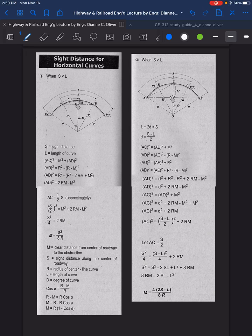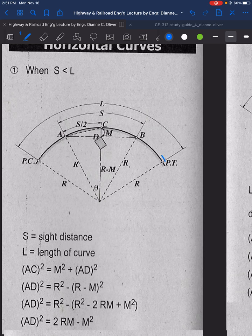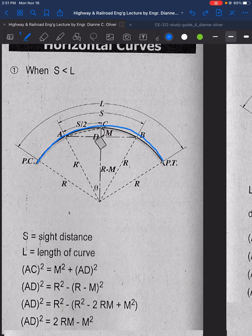Let's now discuss the last part of geometric design under the topic sight distance for horizontal curves. What we mean by horizontal curve is that we are looking at the road in the top view, but this time it is in curves. Here in this figure, this is our roadway as seen on the top view, not the profile view. The line here represents the center of the roadway and this represents the obstruction.